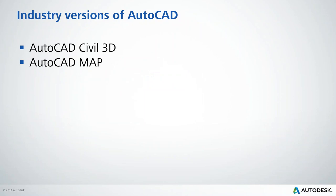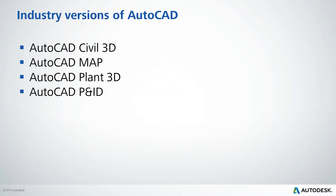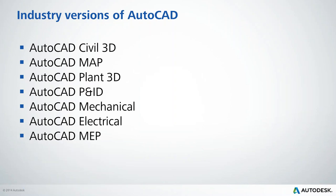Autodesk provides several versions of AutoCAD tailored to various industries. For Civil and Mapping we have AutoCAD Civil 3D and AutoCAD Map. For Process Plant and Industry, we have AutoCAD Plant 3D and P&ID. We also have Manufacturing for 2D manufacturing design, Electrical for circuit board design, MEP for Mechanical, Electrical, and Plumbing, and Architecture for the architecture industry — which is what we're going to cover today.